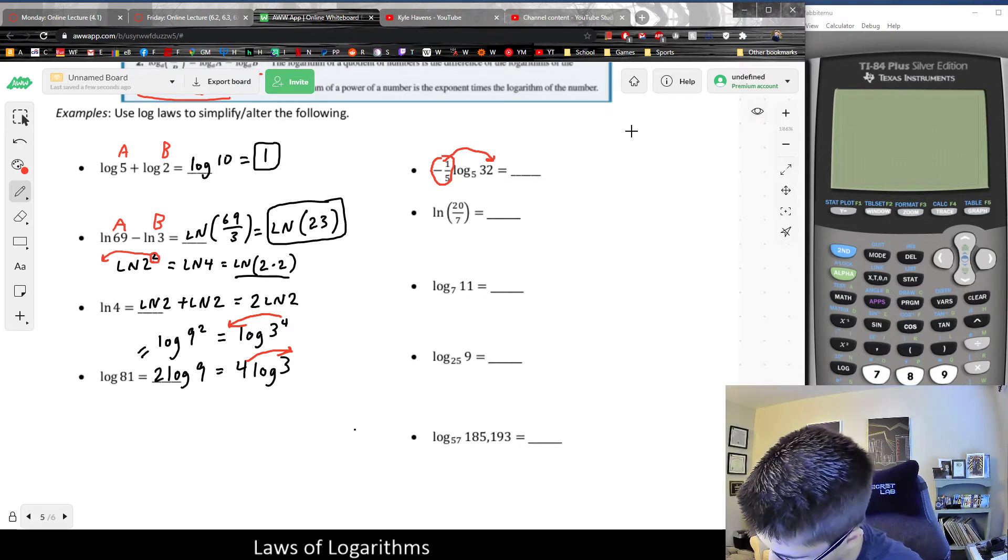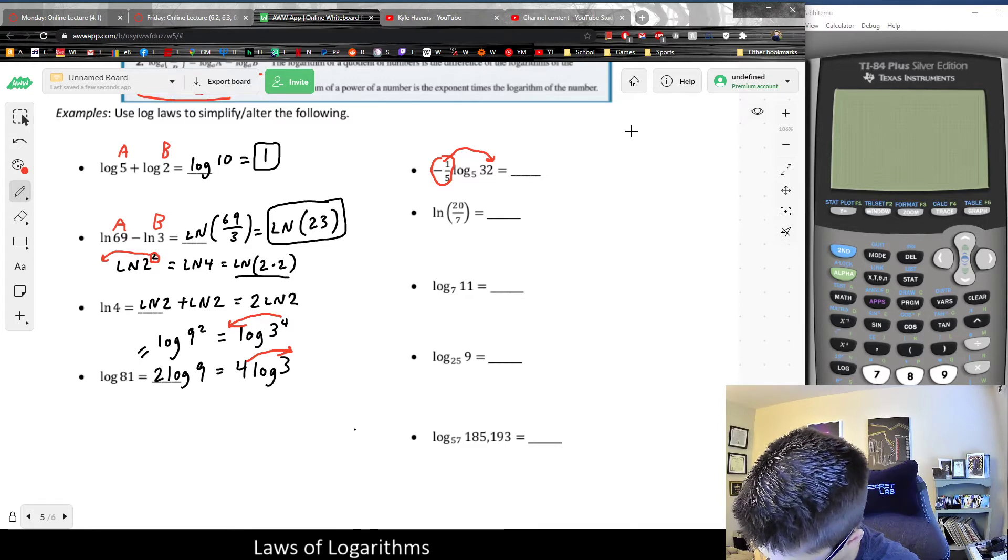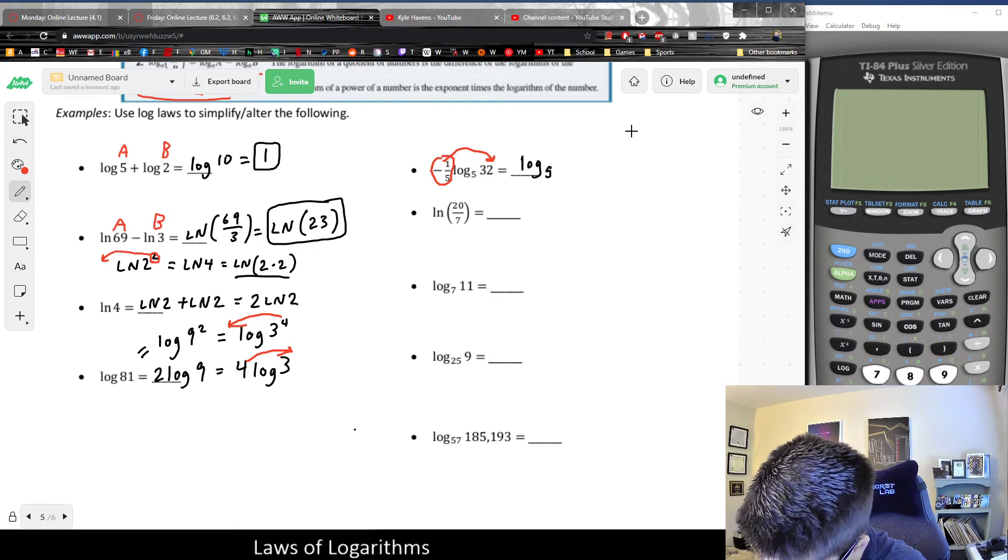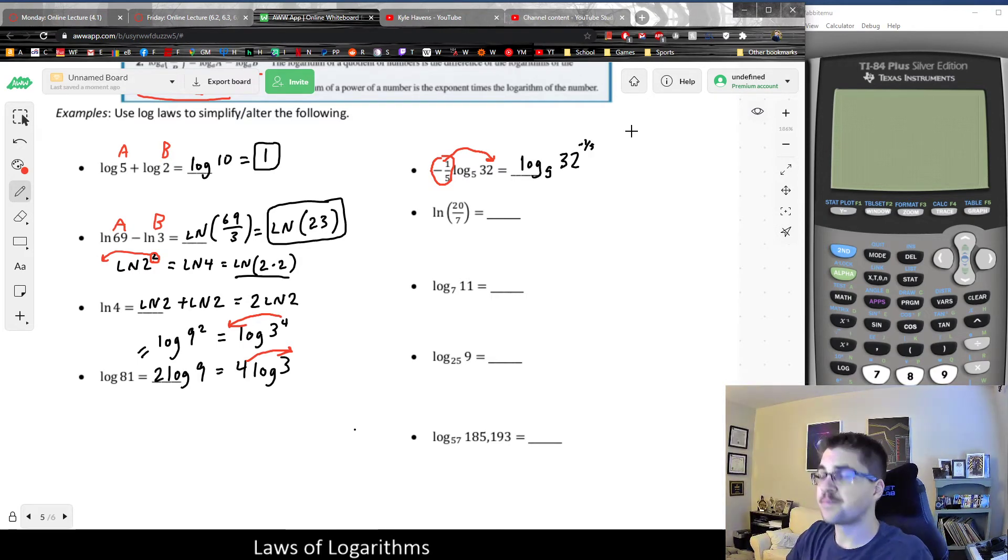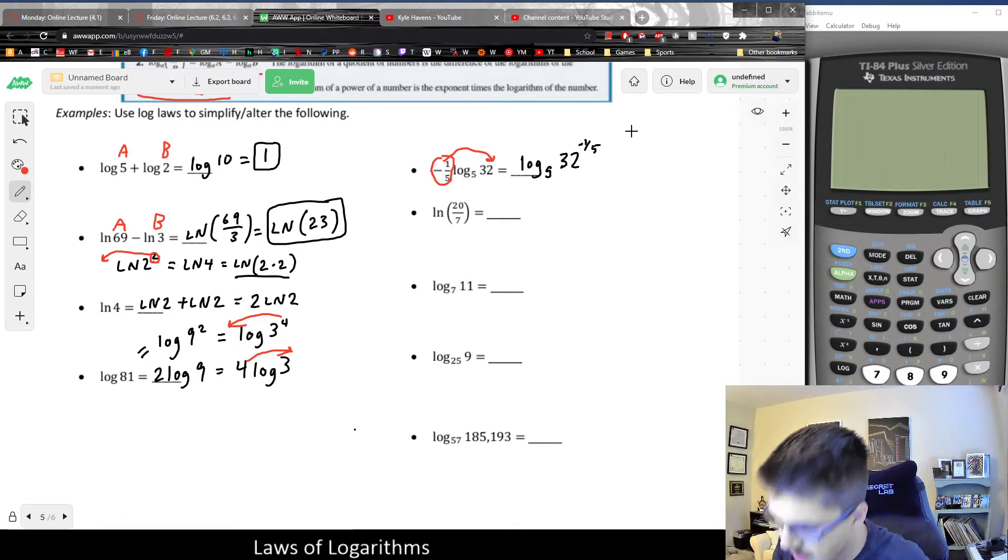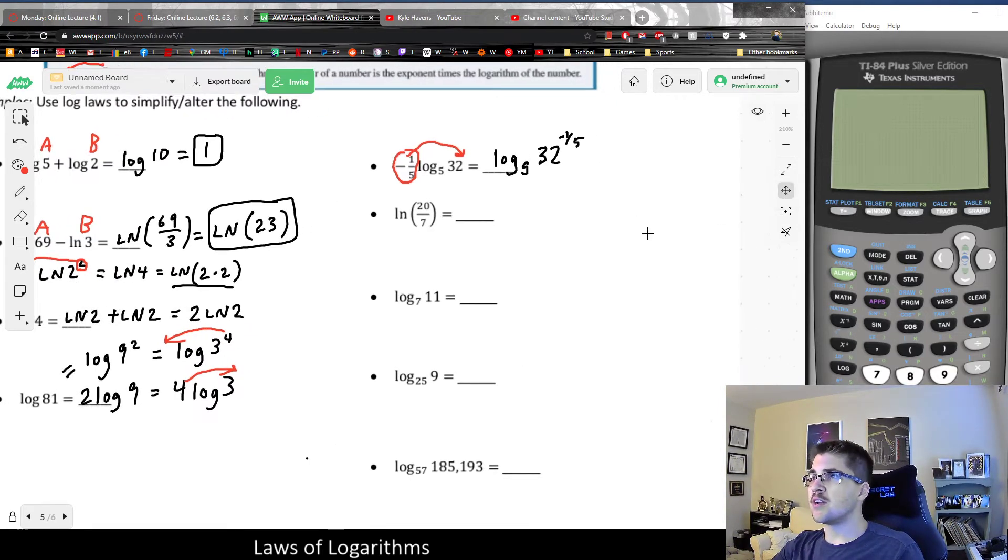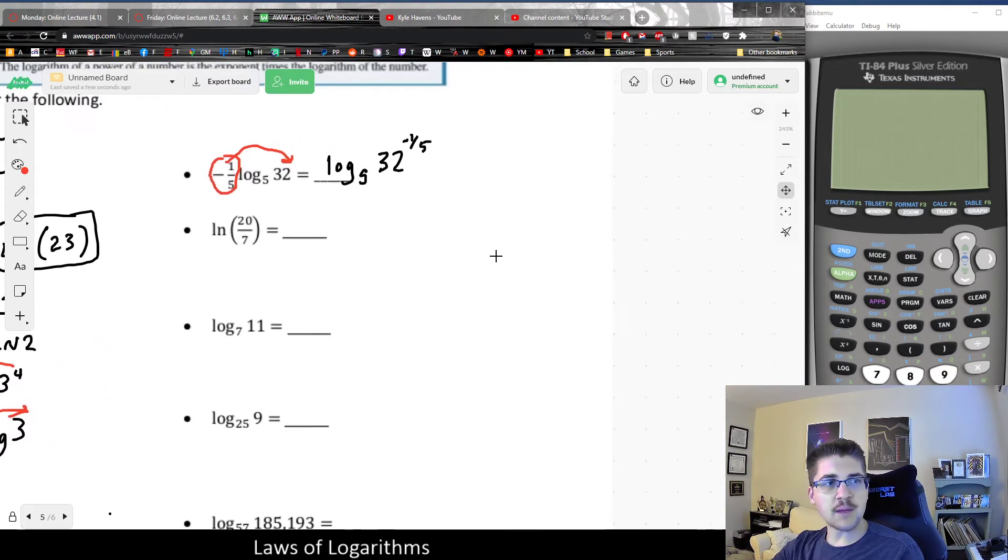Let me get my pen out so I can write this. This would be equal to log base 5 of 32 raised to the negative one-fifth power. And now I could try to use my rules of exponents to try to figure out what that would leave me with.